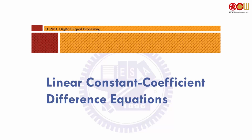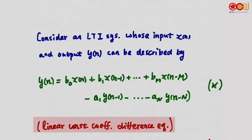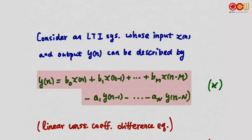In this section, we would like to consider a special type of LTI system. Although it's very special, it is also very, very useful. The LTI system can be described by a linear constant coefficient difference equation. Let's consider an LTI system whose input xn and output yn can be described by this equation, where yn equals b0·xn plus b1·xn-1 all the way to bm·xn-m, and minus a1·yn-1 all the way to an·yn-n.